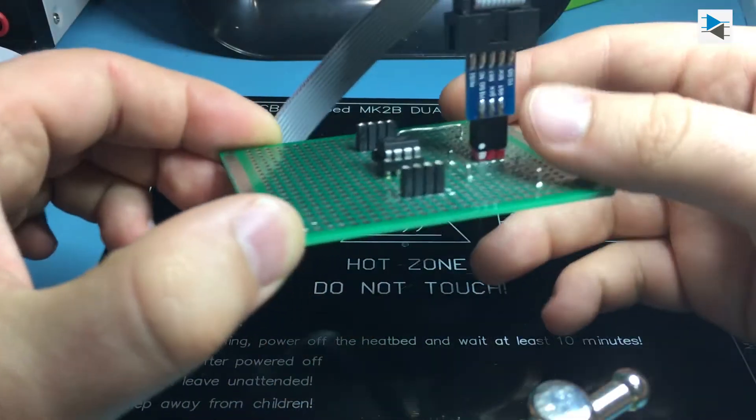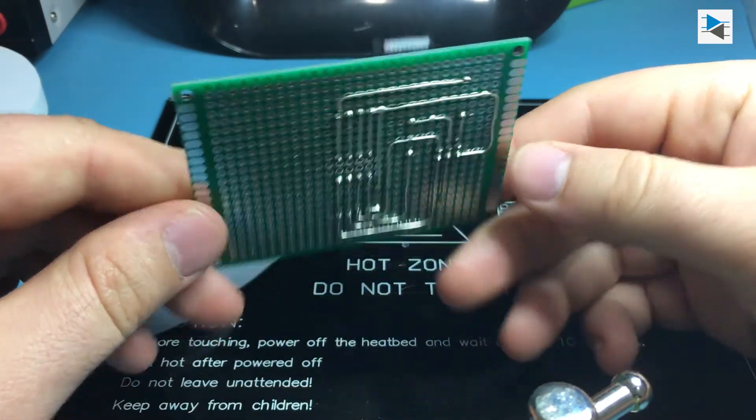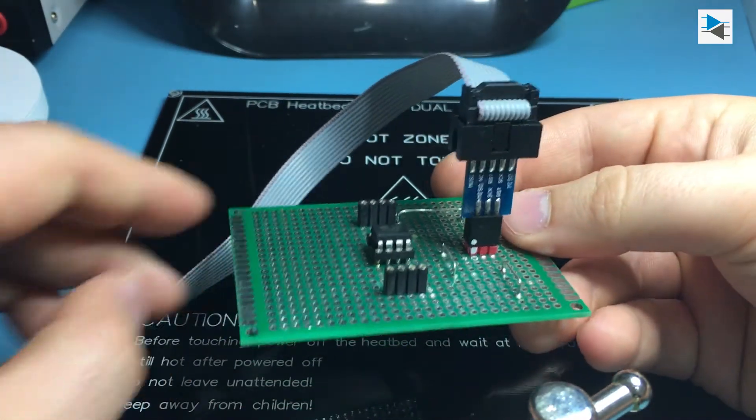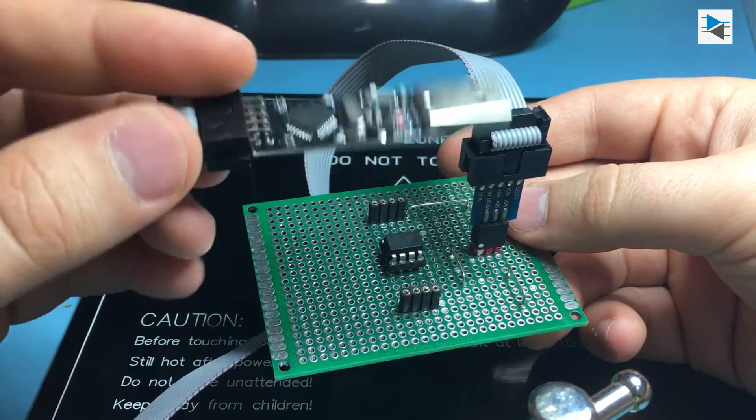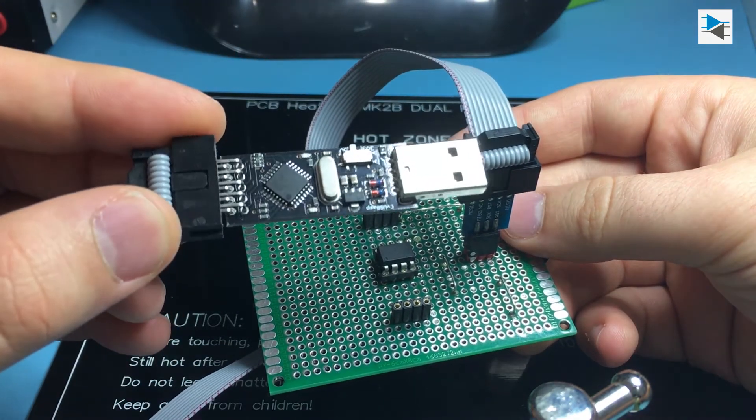The ATtiny85 is programmed with a USB ASP clone, which was updated using an Atmel ICE debugger to get rid of a nagging warning from the Arduino IDE.